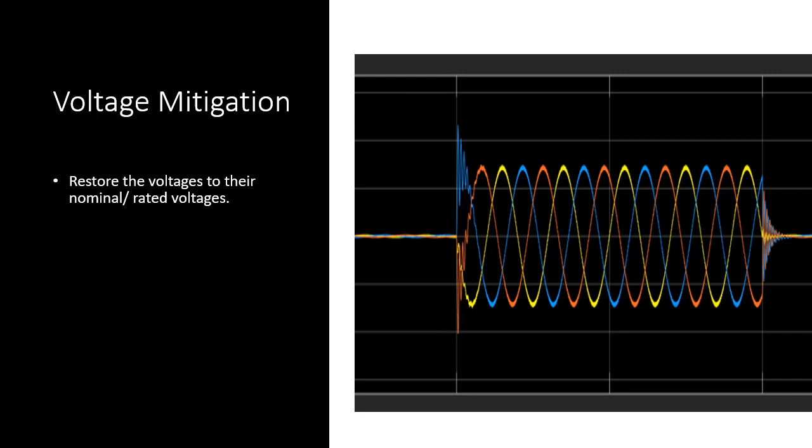There is an urgent need to mitigate our voltage levels whenever voltage sag or voltage swell happens. The majority of the time we face voltage sag issues in our power systems. Whenever we face these voltage problems we need to mitigate them immediately, because our systems operate on a specific voltage value or voltage band.